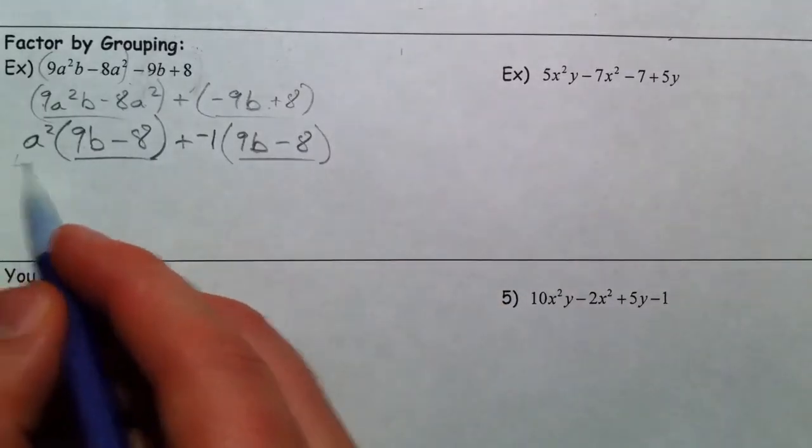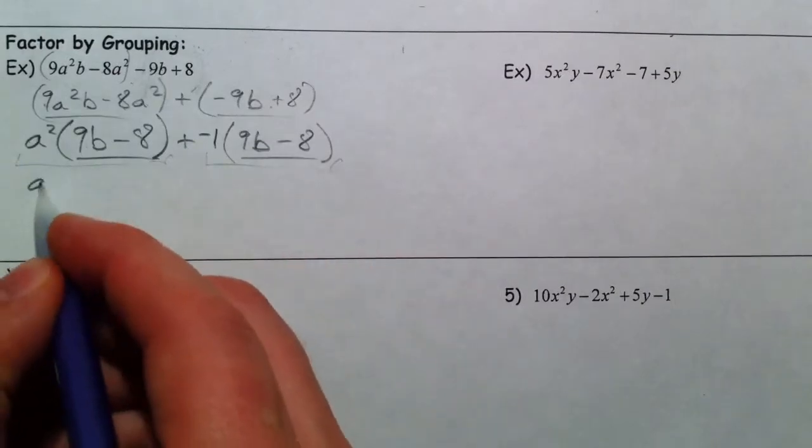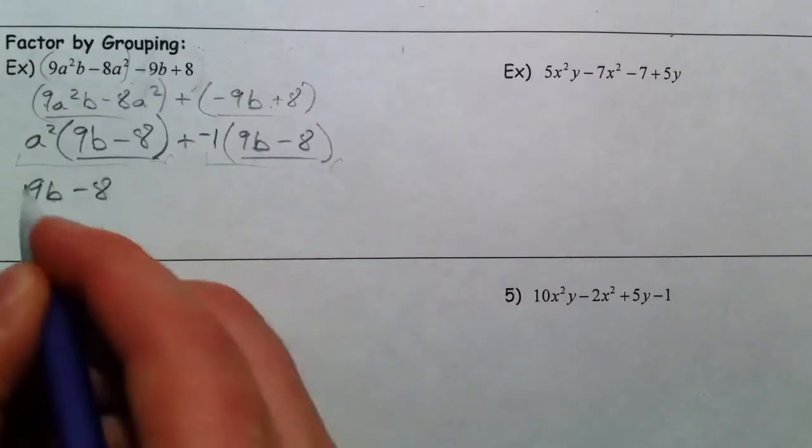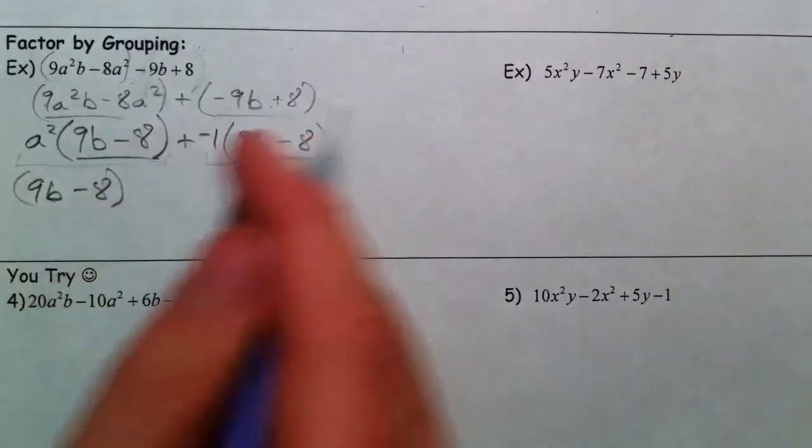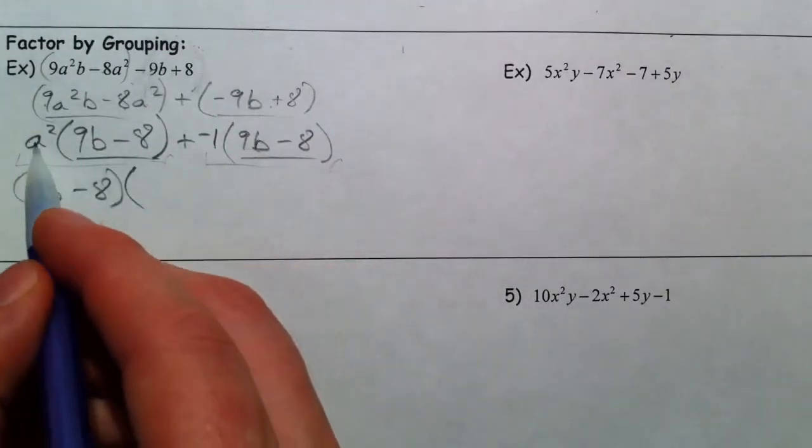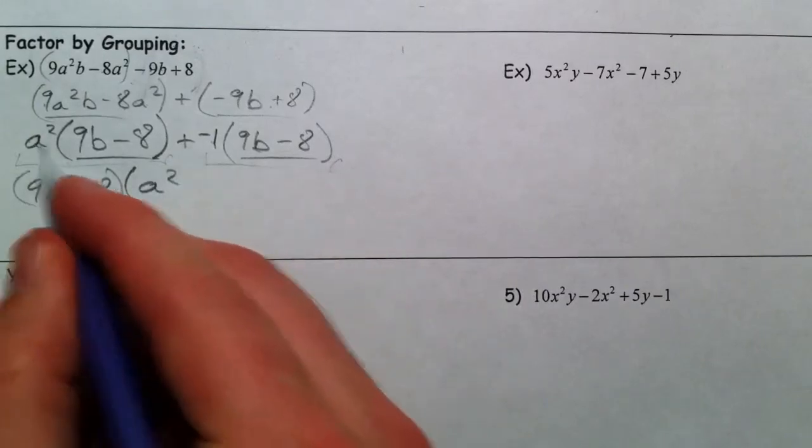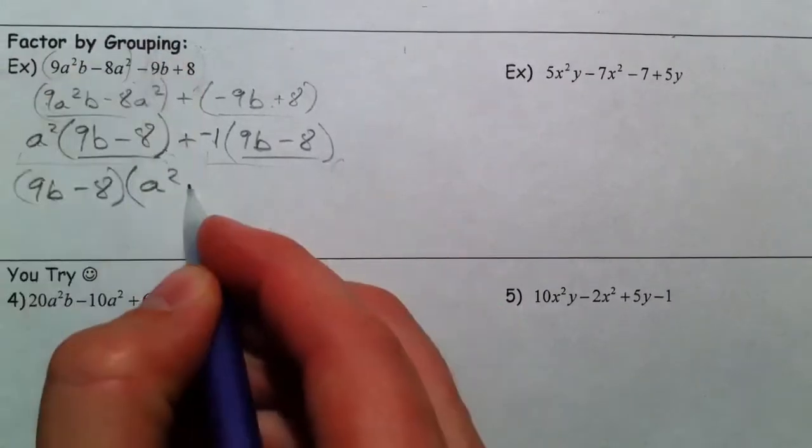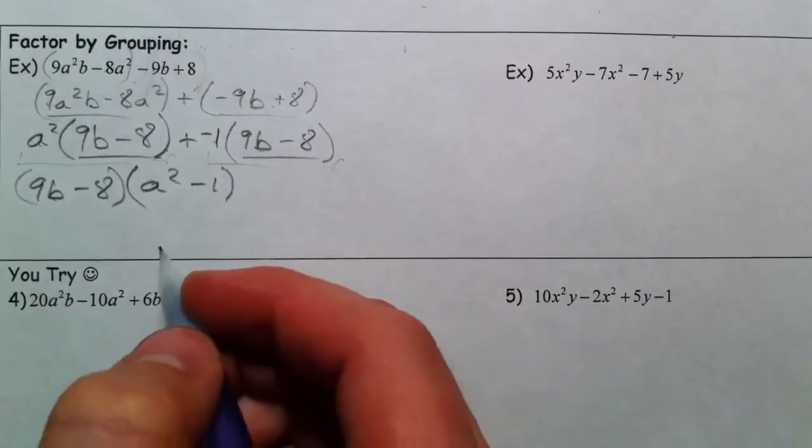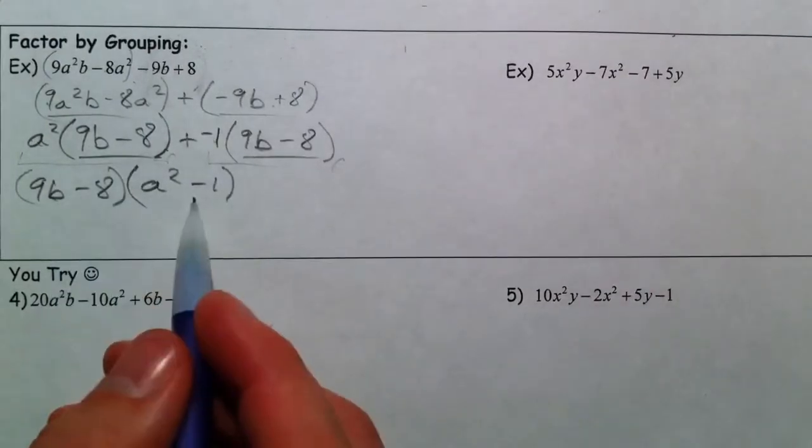This now matches up. Essentially, we have one term, two terms, and what they have in common is that 9b minus 8. And so I'm going to pull the 9b minus 8 out. What's left is a squared minus 1. a squared is left out of the first one, and minus 1 is left out of the second.